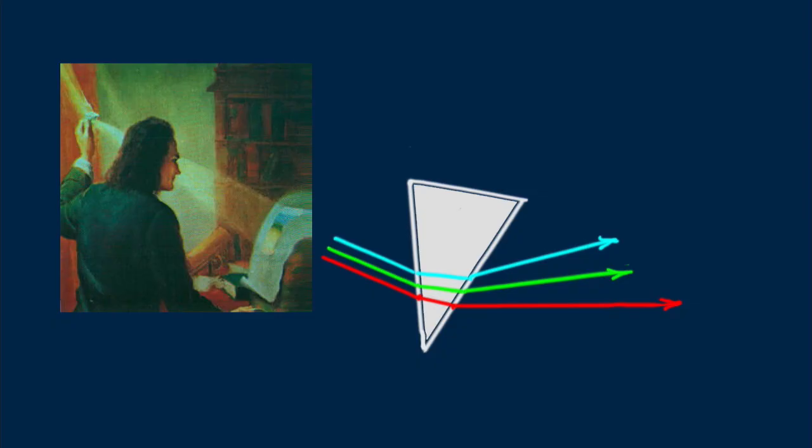Just as a prism separates light into its component colors by refraction, a diffraction grating does the same by diffraction. Yum to both prisms and diffraction gratings.